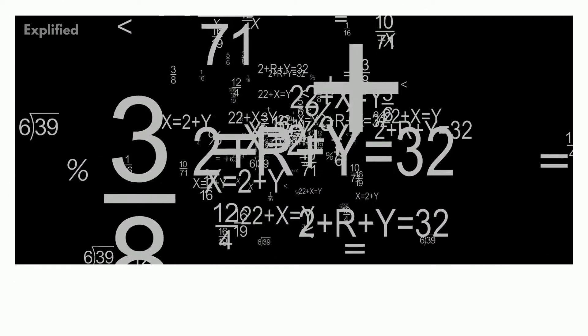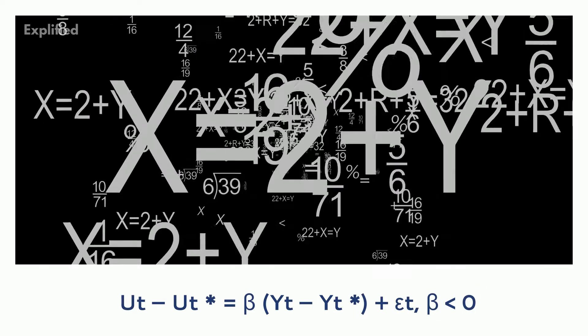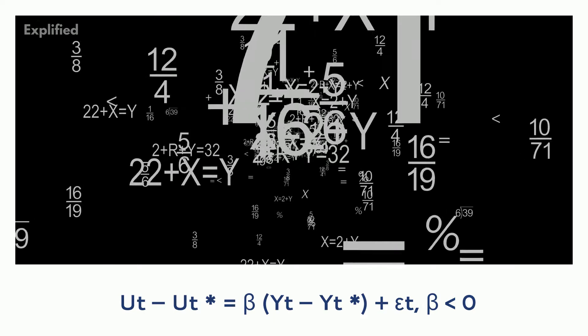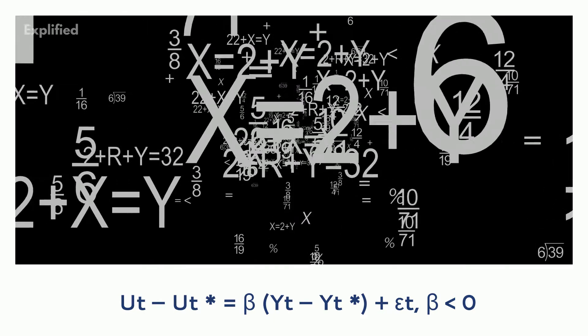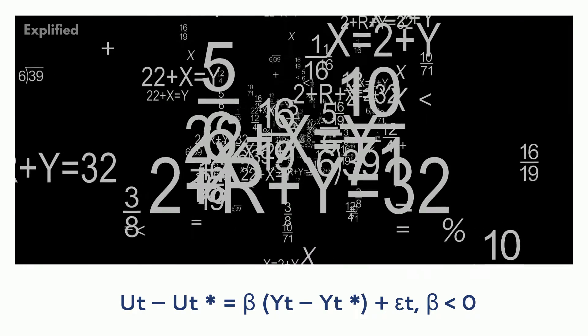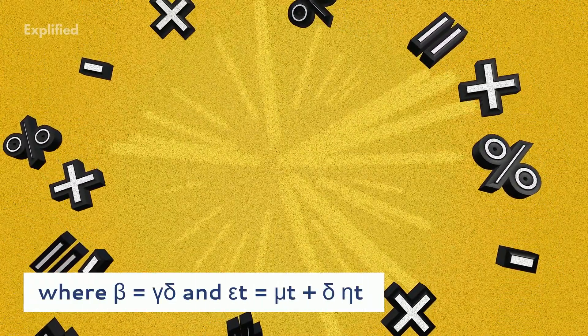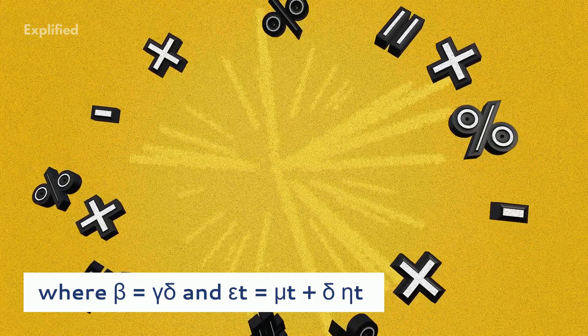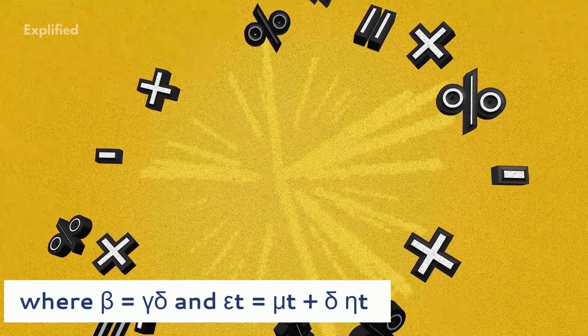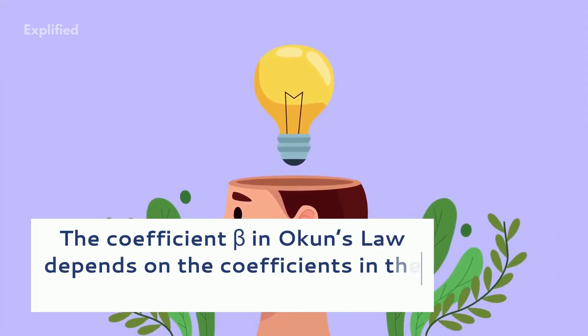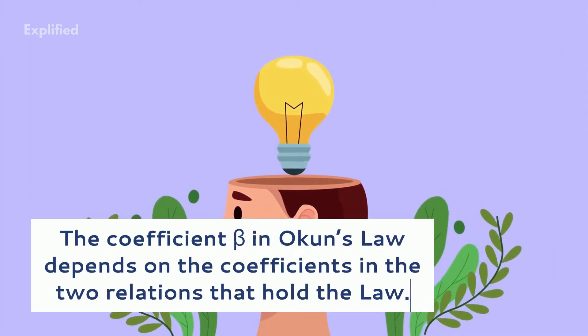We can conclude Okun's Law by substituting equations 1 and 2 as: ut minus ut-asterisk equals beta times (yt minus yt-asterisk) plus epsilon-t, where beta is less than 0, beta equals gamma times delta, and epsilon-t equals mu-t plus delta times eta-t.